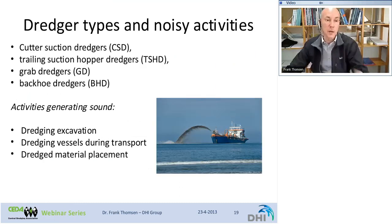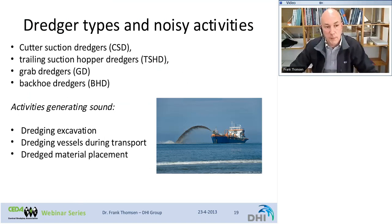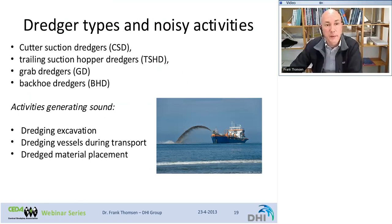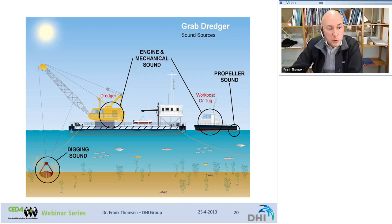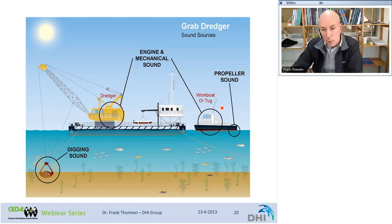There are four basic types of dredgers: cutter suction dredgers, trailing suction hopper dredgers, grab dredgers, and backhoe dredgers. Three activities can emit sound: excavation, dredging vessel during transport, and dredging material replacement. A grab dredger, for example, may produce sound from digging, from the engine, or from the propeller — a fairly limited number of sound sources.